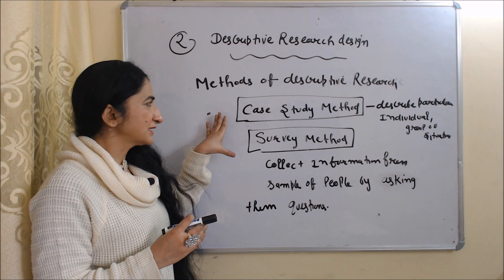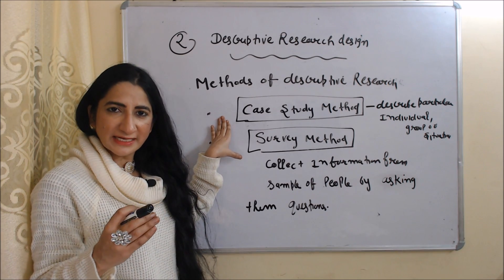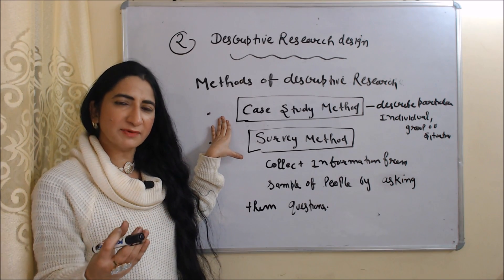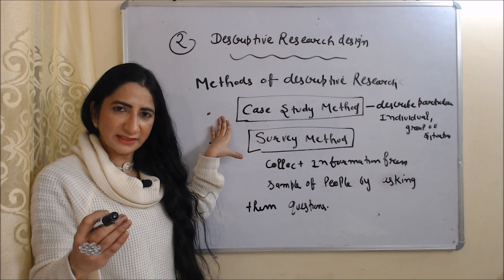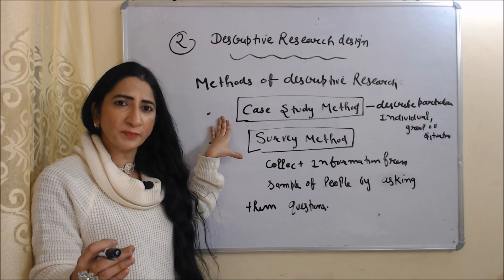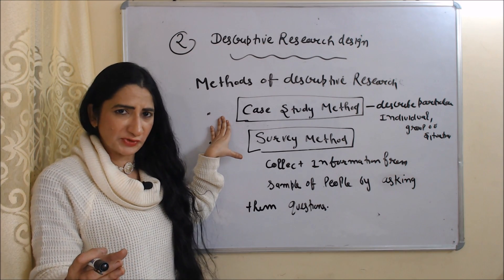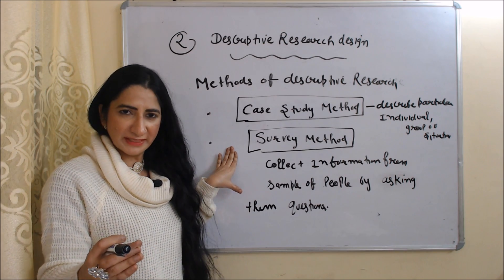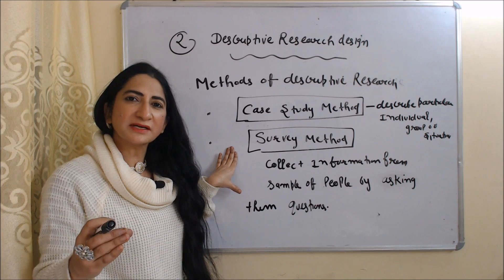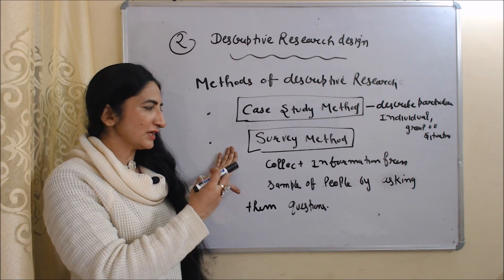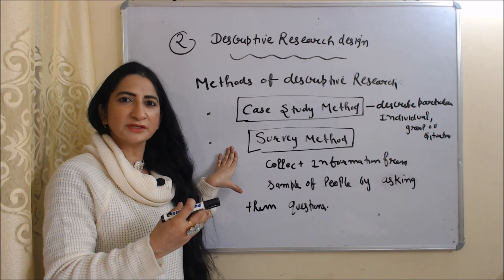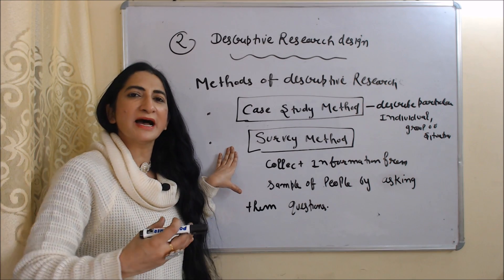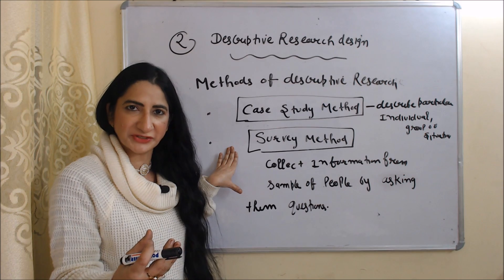Now we will see two methods of descriptive research design. First is the case study method — we describe a particular individual, group, or situation. Second is the survey method — we collect information from a sample of people by asking them questions.